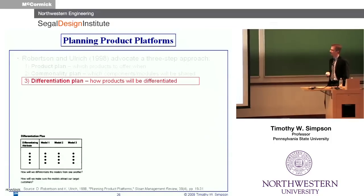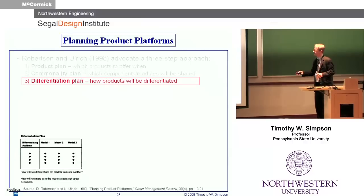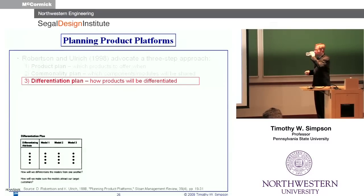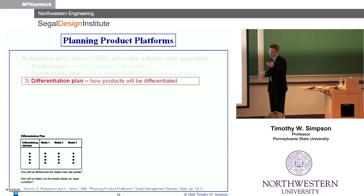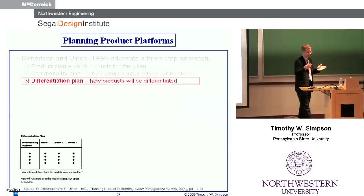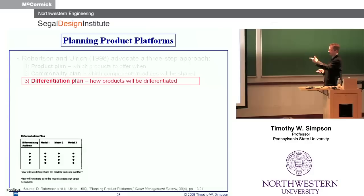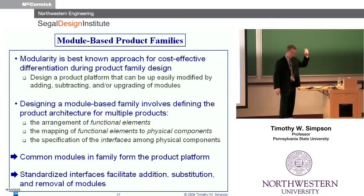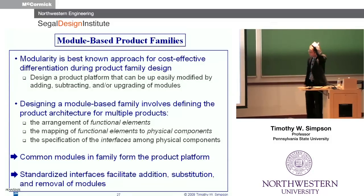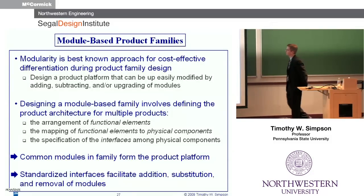So that's in terms of commonality — there are plenty of measures and metrics out there, depending on what you're trying to do with them, whether you're using them in optimization, factoring in cost, or just counting components. A lot of companies when we talk to them are asking mainly for benchmarking. The flip side of the coin — the third and final piece — is differentiation: how are we going to differentiate our products and make them distinct? As I mentioned, modularity is probably the best-known approach for creating a cost-effective family.